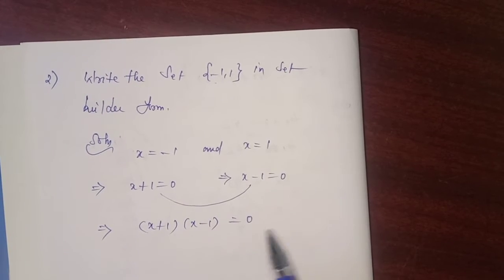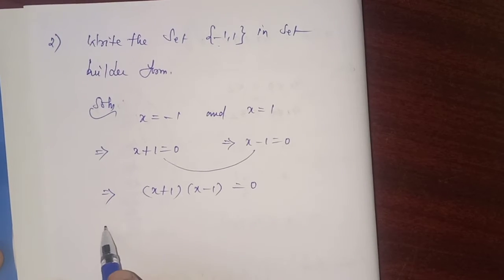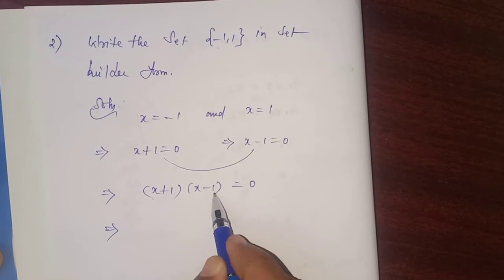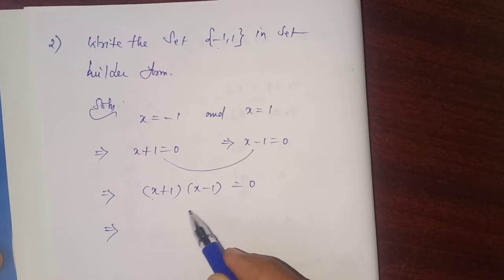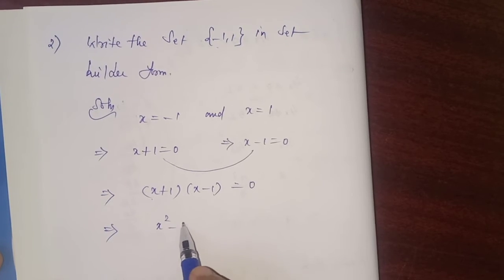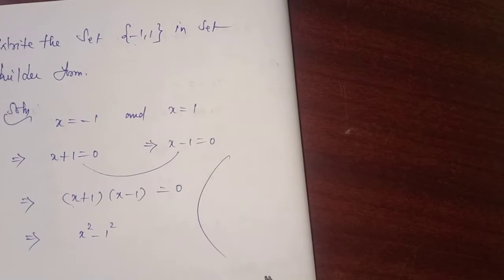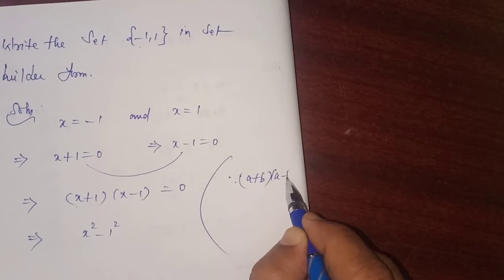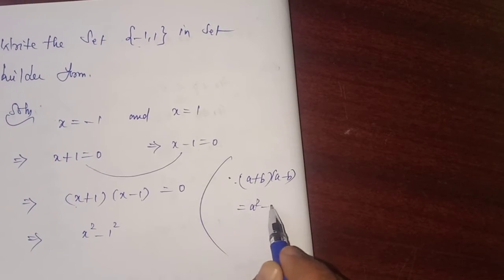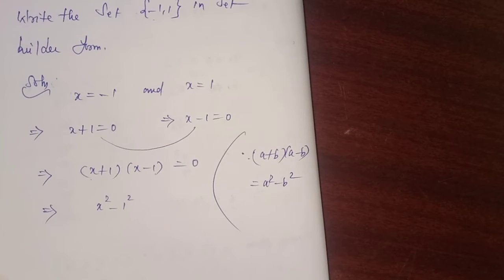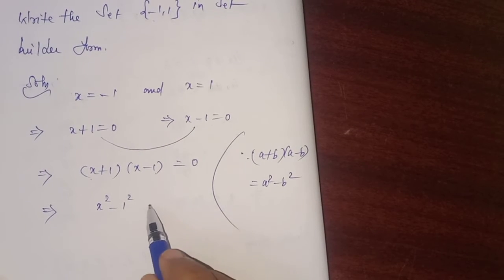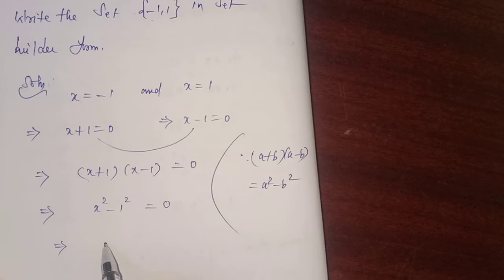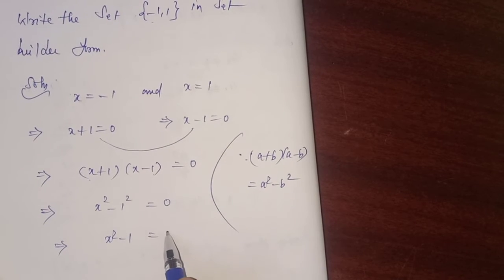(a + b)(a - b), you know that equals a² - b². For your reference, the identity: (a + b)(a - b) = a² - b². So x² - 1² = 0, which implies x² - 1 = 0.